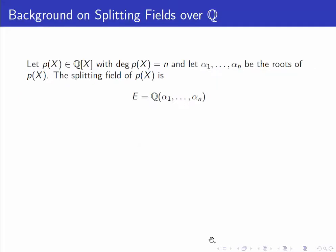Let's start with a quick background on splitting fields over the rational numbers. So let's take a polynomial p of x of degree n. Let alpha 1 up to alpha n be the roots of p of x in the complex numbers. The splitting field of p of x is the subfield of C generated by these roots over Q.